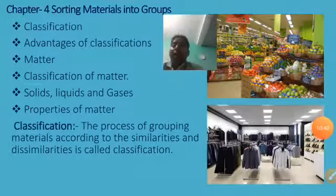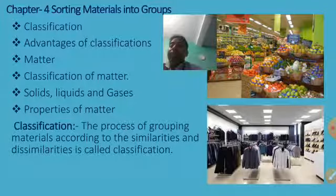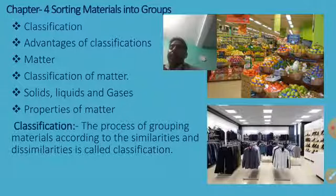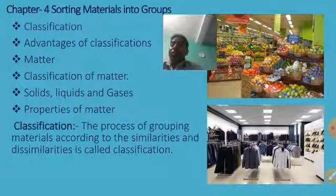Now we will read Chapter 4, Sorting Materials into Groups. In this chapter we will read about the classification of materials, advantages of classification, matter, classification of matter into solids, liquids, and gases, and properties of matter. Classification means the process of grouping materials according to their similarities and dissimilarities.